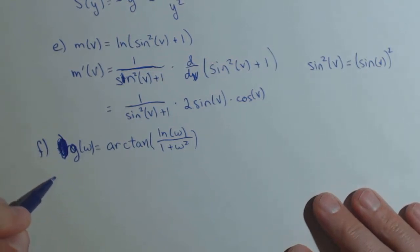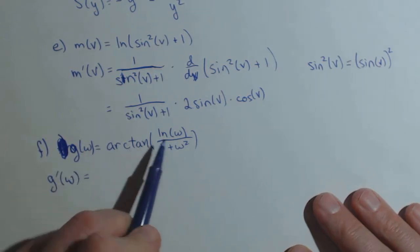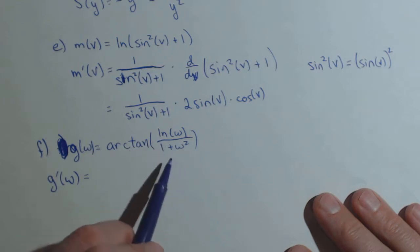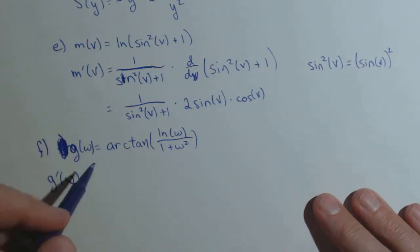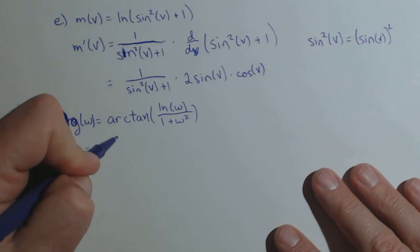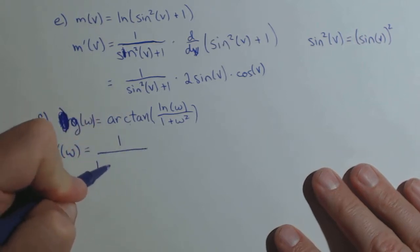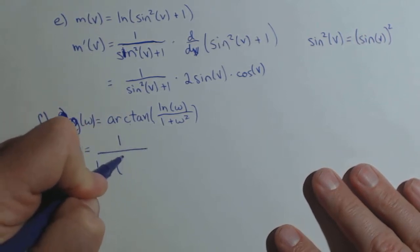So f is going to get a little bit messy here when we go to find g prime of w. Now our outside function is an arctan. Our inside function is what we got in here. So arctan, the derivative is one over, one plus whatever you're taking the arctan of.